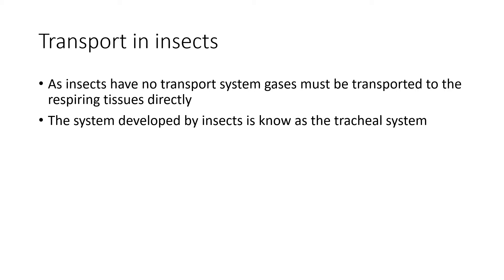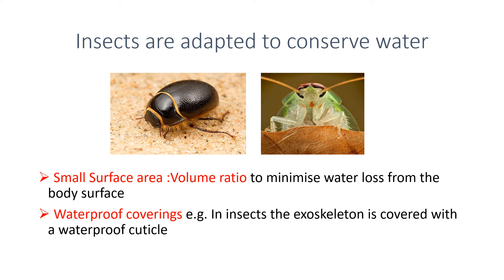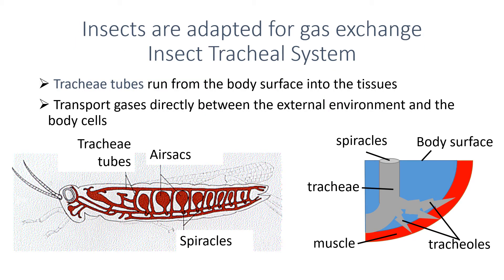When we look at insects, they again have no specific systems for the transport of gases — no lungs or gills — but they have structures adapted into what's called a tracheal system, and that is how gas exchange occurs in an insect. Insects are adapted to conserve water because if they dry out they will very quickly die. As a consequence they have a small surface area to volume ratio and waterproof coverings in the form of an exoskeleton. Insects have a number of tubes running directly from the surface of their body all the way into their tissues, through which gas is transported directly from the external environment into the cells.